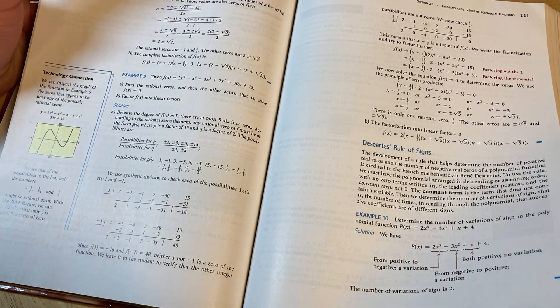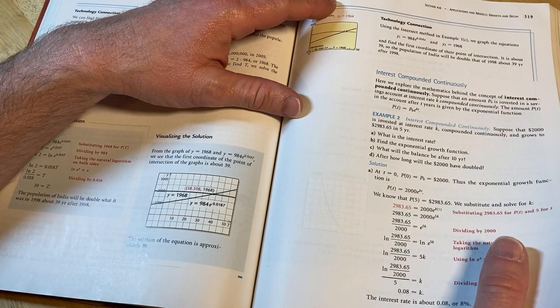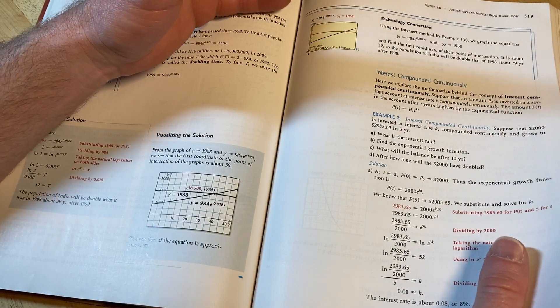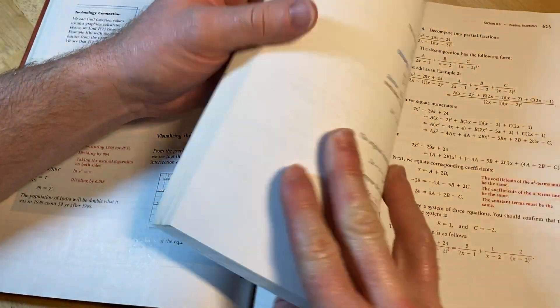You can also watch YouTube videos to supplement your learning of algebra and trig. You don't necessarily need a book. You can also take courses. I actually have a course on trig, and I have a college algebra course. So if you've got both of those, you'd be set.